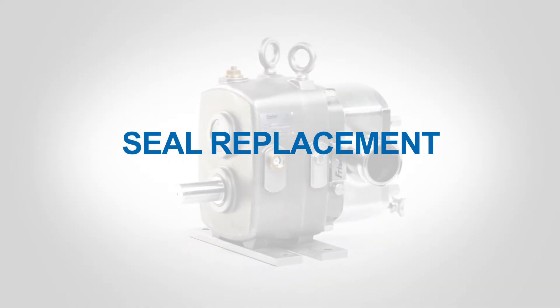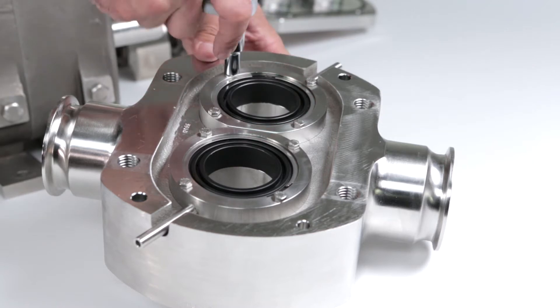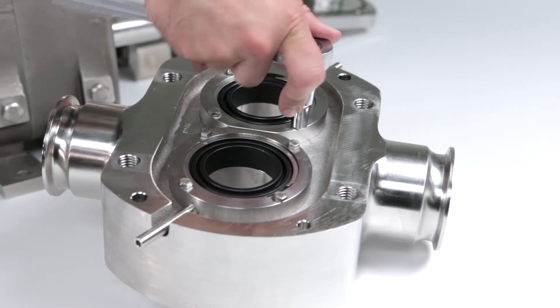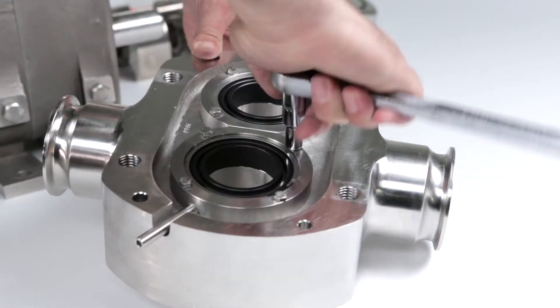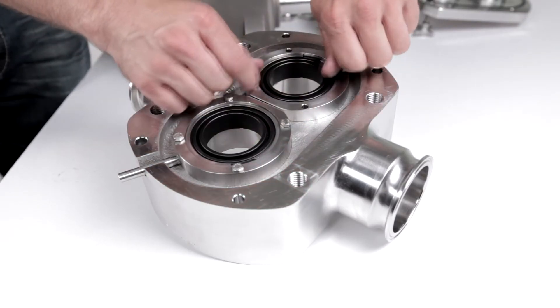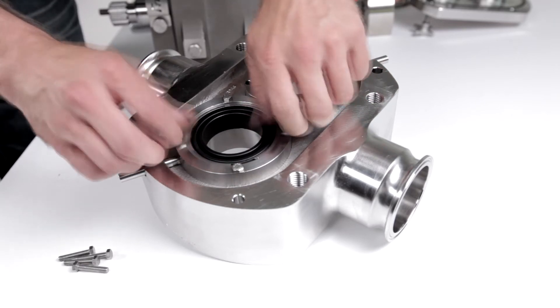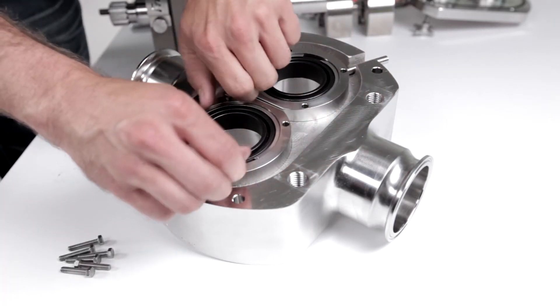Seal replacement. Place the pump housing face down. Loosen the seal housing screws. Remove the seal housing screws, seal cartridges, and seal housing o-rings.